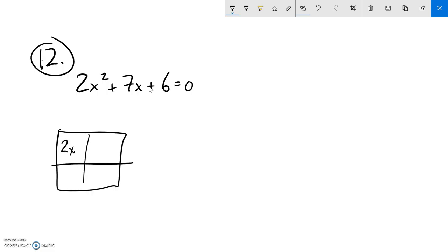So I got my 2x squared and my 6, and one of the things that I know is that this and this will multiply to the same thing. So 2x squared times 6 is 12x squared. So what I want is some things that multiply to 12x squared. I'm just going to focus on just the 12 right now, but that add to 7.